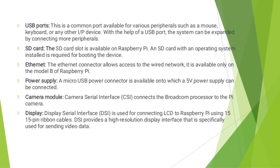The SD card slot is available on Raspberry Pi, and an SD card with an operating system installed is required for booting the device. The Ethernet connector allows access to the wired network; it is available only on the Model B Raspberry Pi.